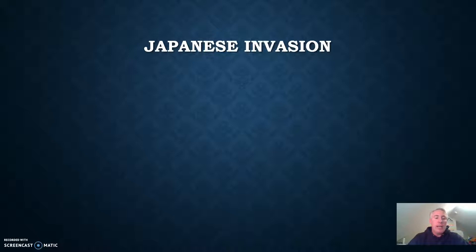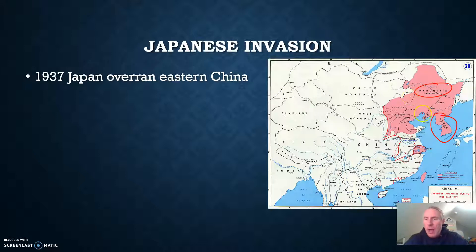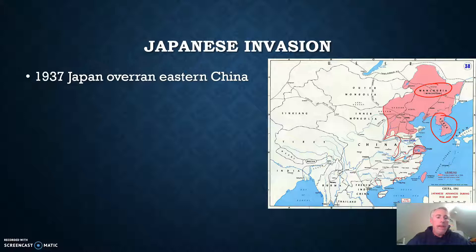What eventually brought both sides together was that in 1937, Japan overran eastern China. Here's Manchuria — notice how they also conquered the Korean Peninsula. By 1937, they really started to make their way into the Chinese heartland. What this started became known as the Second Sino-Japanese War, and many historians believe this should actually be considered the true start of World War II.